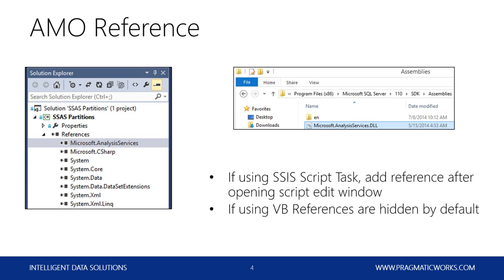You can do this as a standalone .NET application, or you could do it in the Script Task within SSIS. If you're using the SSIS Script Task, you'll still need to add the reference, but you'll do that after you open the script task window. So instead of looking in your SSDT interface, you'll go to your task, open it, click Edit Script, and then you'll be able to get this same sort of view and add your reference.